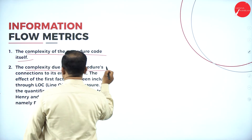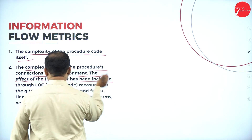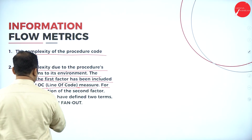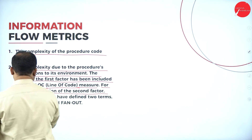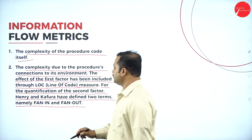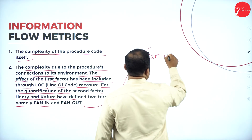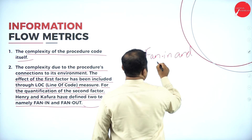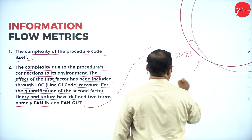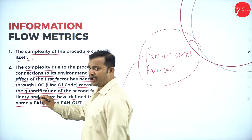The second factor is the complexity due to the procedure's connections to its environment. The effect of the first factor has been included through LOC — lines of code — measure. For quantification of the second factor, Enri and Kafura defined two terms: fan-in and fan-out. These are the two important terms defined here.